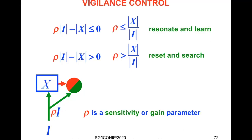How is vigilance computed? An input vector instates a vector of activities in feature detectors, and simultaneously tries to activate the orienting system — but multiplied by a parameter rho, which is vigilance, a sensitivity or gain parameter. As these features are instated, they try to shut off the orienting system. If excitation is less than inhibition, the orienting system stays quiet and the system can resonate and learn. If inhibition is insufficient, the orienting system gets activated, causing reset and search for new categories.